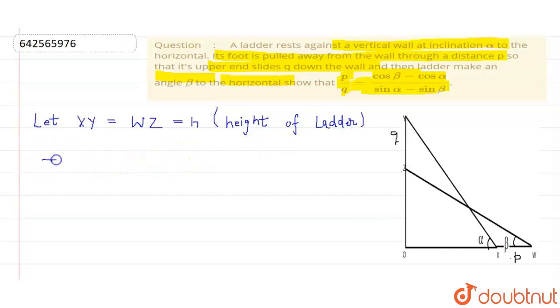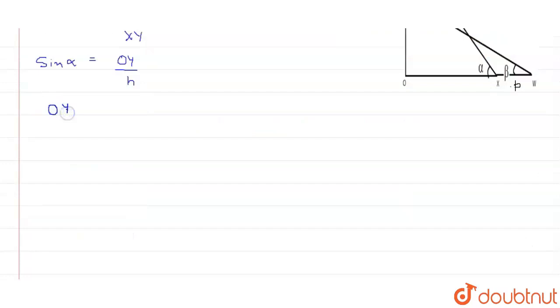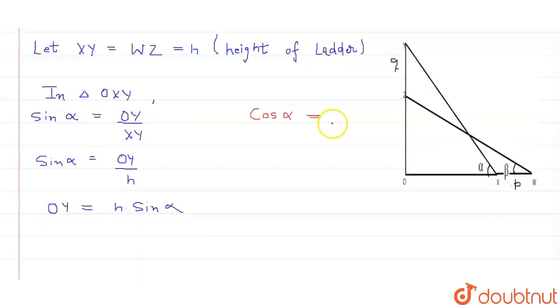Now in triangle OXY, sin alpha is equal to OY by XY, and we know that XY is equal to h. So OY equals h sin alpha. Similarly, cos alpha equals OX by XY, so OX equals h cos alpha.